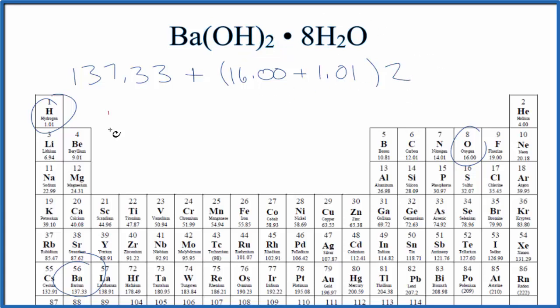Then we're going to add the water molecules. We have eight water molecules, eight separate water molecules around the barium hydroxide. So we have eight times hydrogen, 1.01, two hydrogen atoms in water, plus the oxygen—we said that was 16.00.